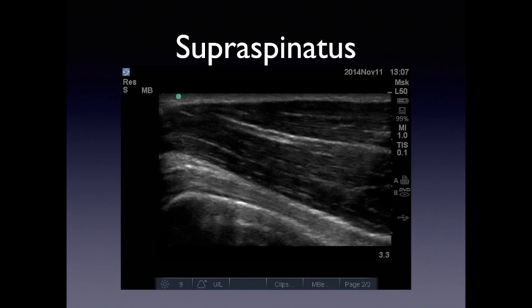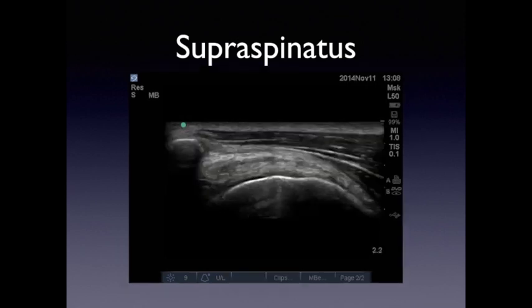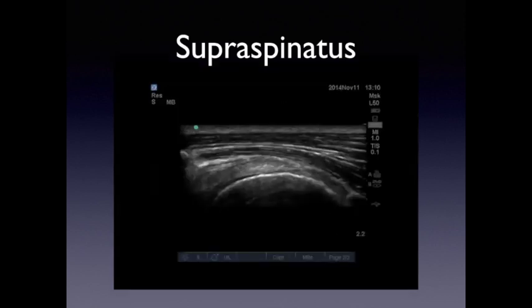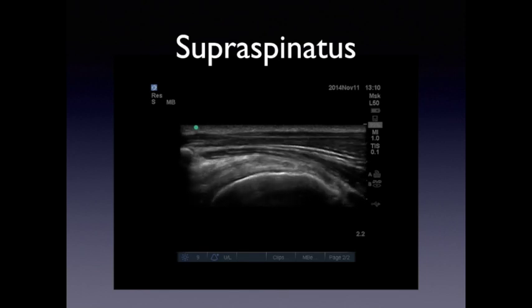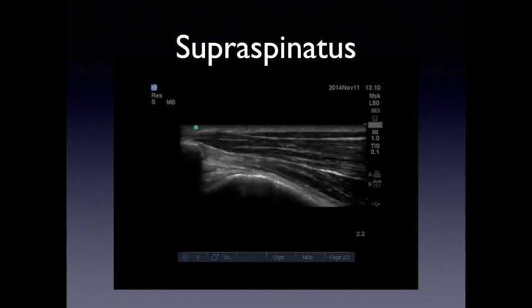You will obviously see fibers from the deltoid, and as you move along you'll see the acromion along with the hyperechoic humeral head, and then you'll have the supraspinatus muscle. As your patient starts to abduct the arm, you'll see the movement as the supraspinatus glides under the acromion and then disappears.